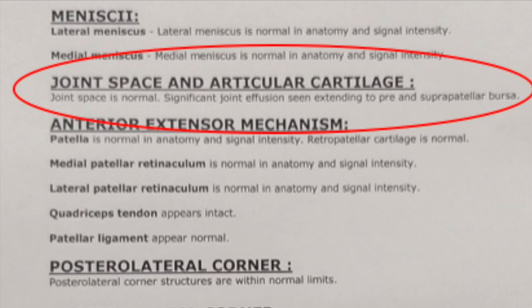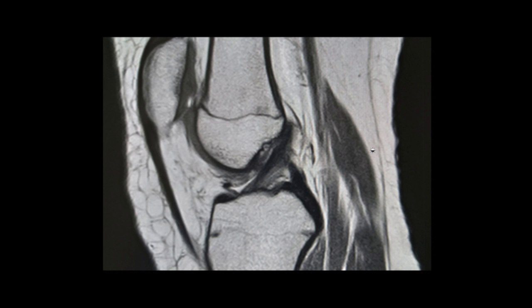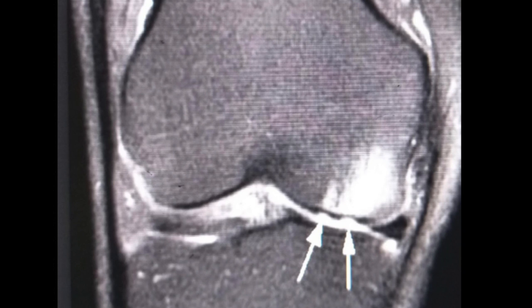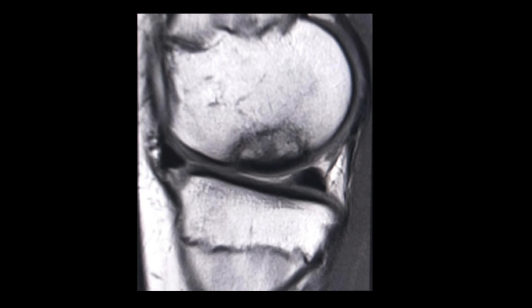Next in the format comes joint space and articular cartilage. Intact articular cartilage is beautifully visualized in a PD non-fat sat image. We have to examine the articular surface throughout the weight-bearing surface. This is an example of cartilage loss in the weight-bearing surface — we must measure the cartilage defect. We can also have osteochondral defects; we have to measure them, see whether they are separated or not, and note their exact location.